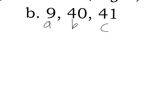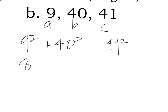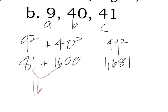In the next example, the sides are 9, 40, and 41. The largest number, 41, is c. 9 squared is 81, 40 squared is 1,600, and 41 squared is 1,681. Adding 81 and 1,600 gives 1,681, which equals 41 squared exactly — so a squared plus b squared equals c squared, meaning this is a right triangle.